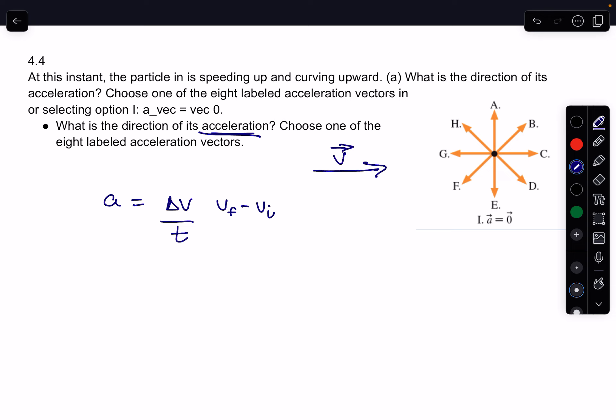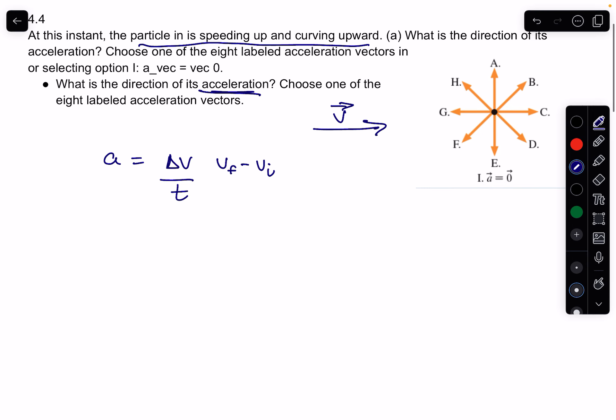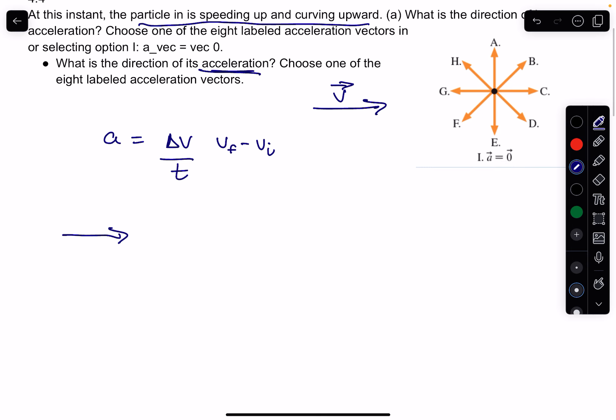And so the other important point is that the particle is speeding up and curving upward. So if I've got a velocity this way, my original velocity, this is v initial, and then v final is curving up.